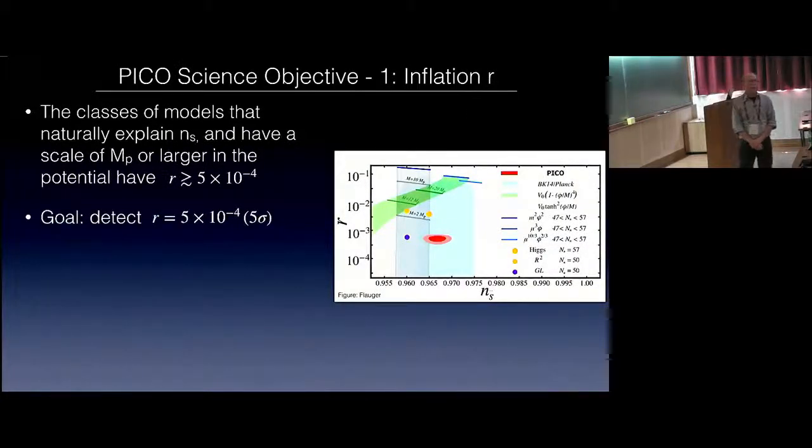Science objective number one is inflation. Classes of models that naturally explain n_s, and have a scale of Planck mass in the potential or larger, have a tensor to scalar ratio of 5 times 10 to the minus 4. This is shown here on the usual plot, R versus n_s, the Planck constraints, one sigma, two sigma, with various Planck scales. The goal for Pico is to reach 5 times 10 to the minus 4 at 5 sigma. If you want to think about it differently, it's a sigma R of 1 times 10 to the minus 4.